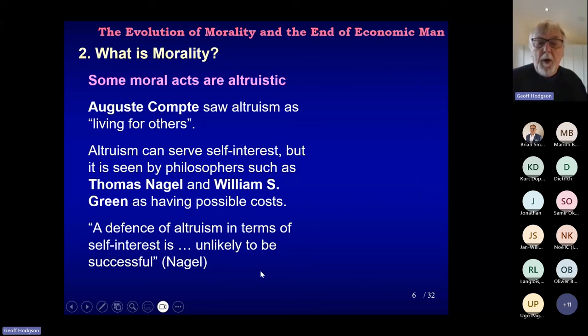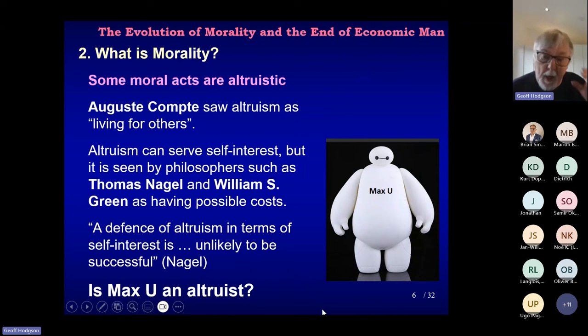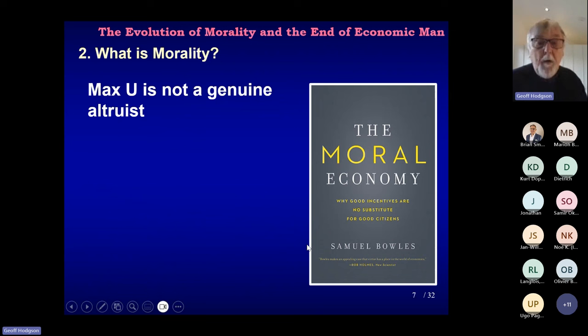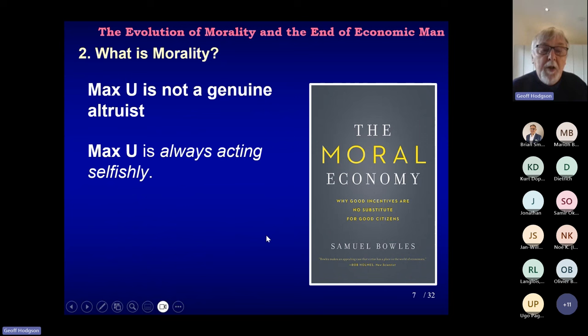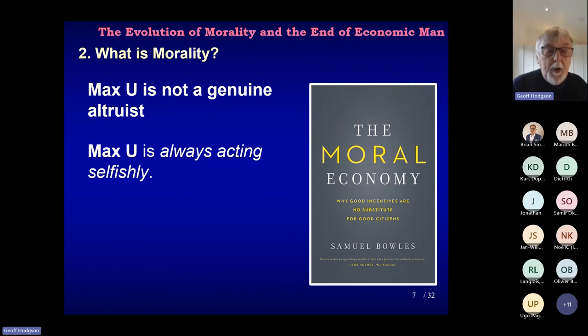So we can raise the question about MaxU — this famous utility maximiser who came to prominence at the end of the 19th century. Is he an altruist? I would say he's not a genuine altruist, because he's always acting selfishly. Even if he's acting for others or to the advantage of others, his purpose is always to maximise his own utility.